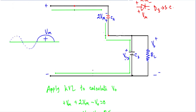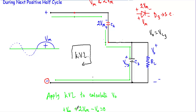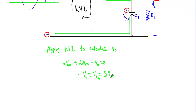I can now calculate the output voltage by applying Kirchhoff's voltage law in the clockwise direction. Output voltage Vo equals Vc3. Traversing the loop: I first encounter the input voltage at its negative terminal, giving plus Vm; then I encounter capacitor C2 at its negative terminal, giving plus 2Vm; then I encounter the output voltage Vo at its positive terminal, giving minus Vo. Setting the sum to zero: Vm plus 2Vm minus Vo equals zero, therefore Vo equals 3Vm. The output voltage is three times the maximum value of the input voltage, which is why we call this circuit a voltage tripler circuit.